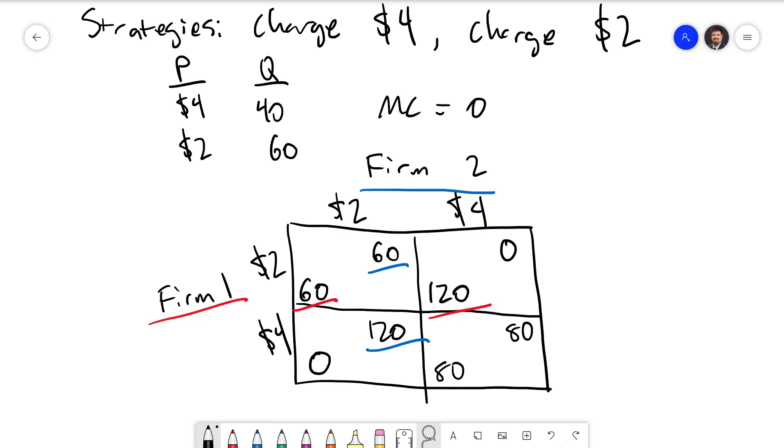Just like the prisoner's dilemma, we can see that we have a dominant strategy emerging. The better choice is to always attempt to undercut and charge $2. So the Nash equilibrium is going to be both firms charging $2. Both firms will make a profit of 60.